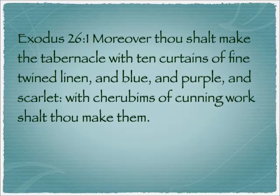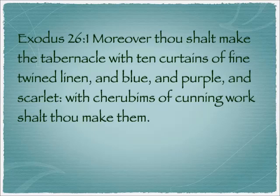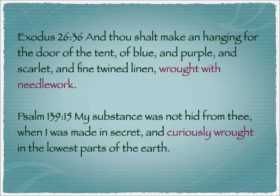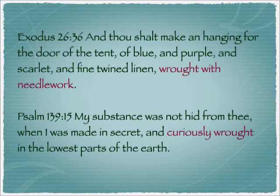Finally, we have the innermost of the coverings, Exodus 26:1: 'Moreover, thou shalt make the tabernacle with ten curtains of fine twined linen and blue and purple and scarlet, with cherubims of cunning work shalt thou make them.' There is an interesting word relationship here. In Exodus 26:36 it talks about the same fabric: 'a hanging for the door of the tent of blue and purple and scarlet and fine twined linen wrought with needlework' — that word means embroidered.